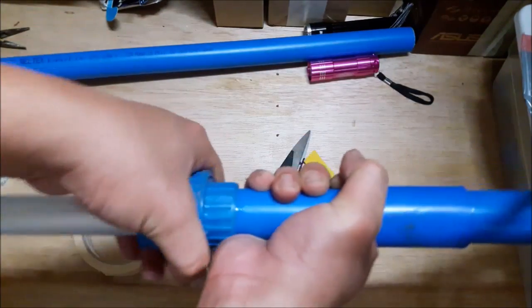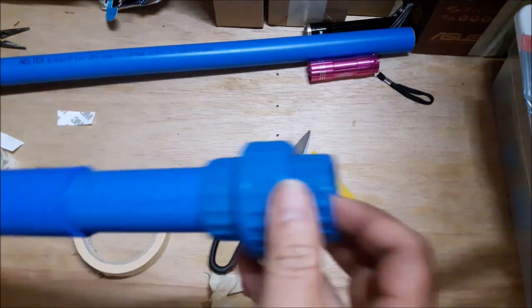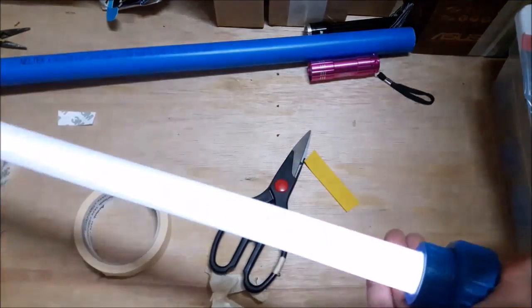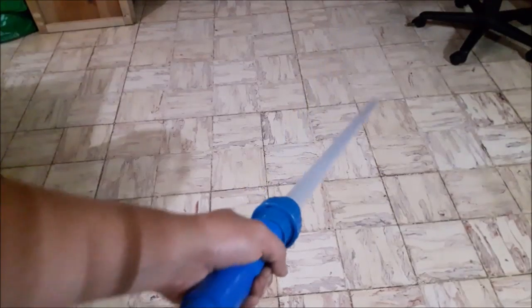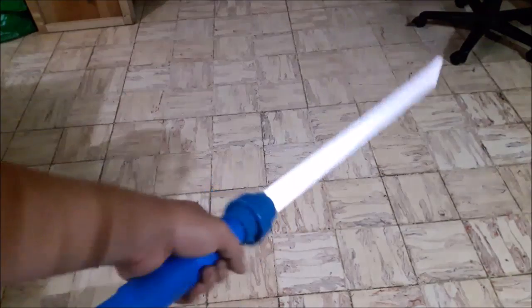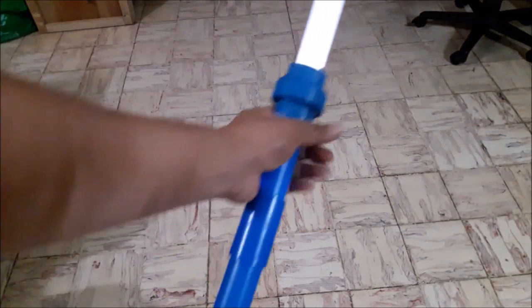And there you go. That's the PVC proto-alpha, for lack of a better name. And there it is, a glorified fluorescent light with a hilt. And we'll be doing a lot more with this thing.